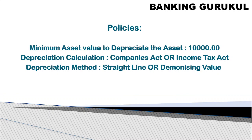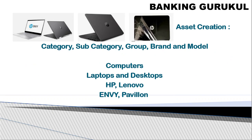There are two depreciation methods: the straight-line method and the diminishing value method. In the straight-line method, if an asset costs 1 lakh rupees and depreciation is 20%, then every year 20,000 is reduced and after five years the asset value becomes zero. In the diminishing value method, in the first year 20% of 1 lakh is 20,000 — the value becomes 80,000. Next year, depreciation is calculated on 80,000, giving 16,000, and so on. The asset value never reaches zero with this method.